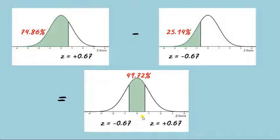Or we could say that there's about a 49.72 percent chance that a randomly selected person from the population would fall into this range of 90 to 110 for their IQ.